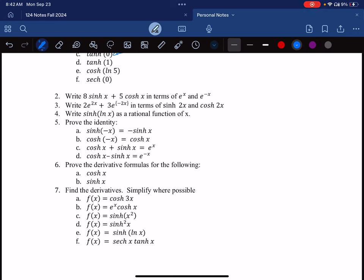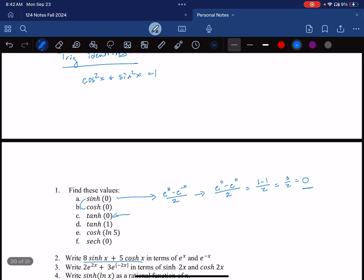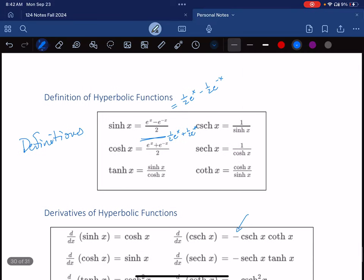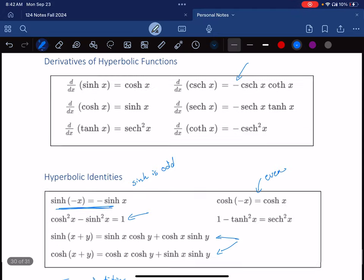hop back and forth between an e to the x formulation and the sinh sort of shorthand notations. So here it says write 8 sinh of x plus 5 cosh of x in terms of e to the x and e to the minus x. So again, I'm going to come back up to these formulations, right?